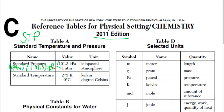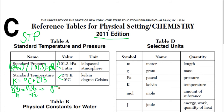For standard temperature, that value is 273 Kelvin or zero degrees Celsius — those are equal to each other. We have the formula on Table T: Kelvin equals degrees Celsius plus 273. You might also see STP mentioned in combined gas law problems: P1V1/T1 = P2V2/T2. If it mentions STP, use 273 Kelvin and whichever pressure unit fits the problem.